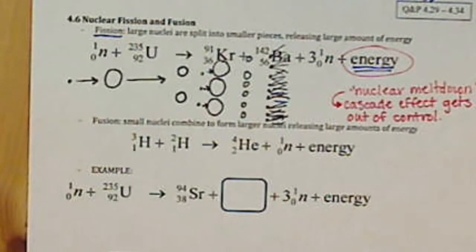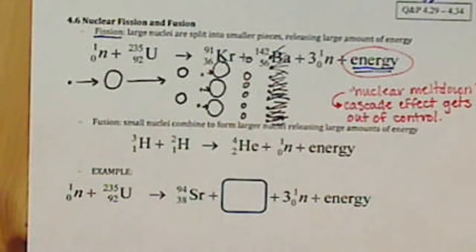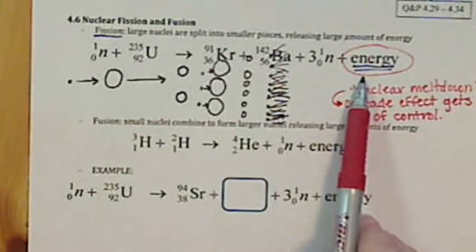So rather than the neutrons going to collide with a large nuclei, they'll be absorbed into this rod, and therefore you can then control how many of these neutrons then are colliding in order to produce energy.